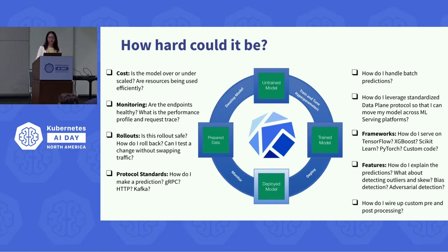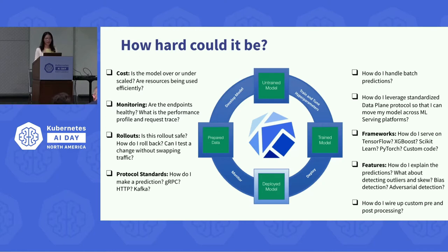Not all users want to run inference using real-time requests — some only want to run end-of-day batch inference, so we need to support that too. There are also many different types of machine learning training frameworks, so when doing the serving step, we want to be able to serve various models trained by different frameworks. After a model runs inference, the next step is explainability, so we also integrate an explainer component into K-SERV.